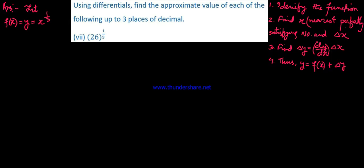Now, we need to find a value of x that is near 26 and is a perfectly satisfying number. Where x should be near 26, a value near to 26 that is a perfect cube. 26 is not a perfect cube, but 27 is.